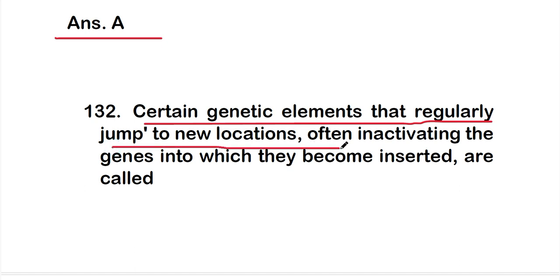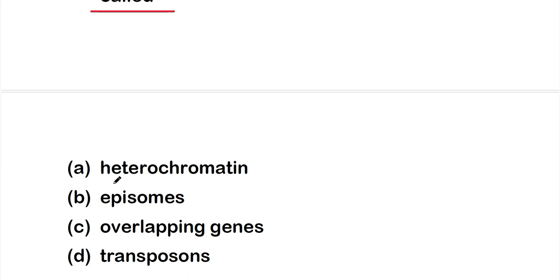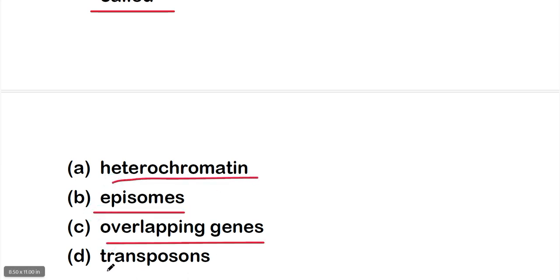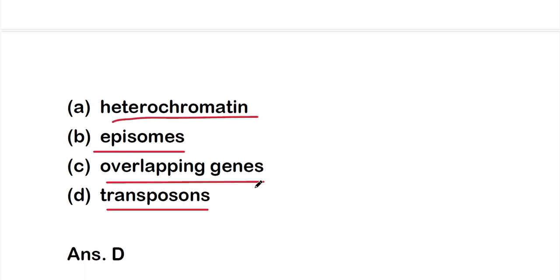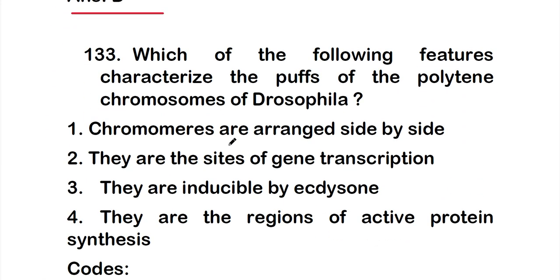Question 132: Certain genetic elements that regularly jump to new locations, often inactivating the genes into which they become inserted, are called option A - heterochromatin, option B - episomes, option C - overlapping genes, or option D - transposons. The right answer is option D, transposons.